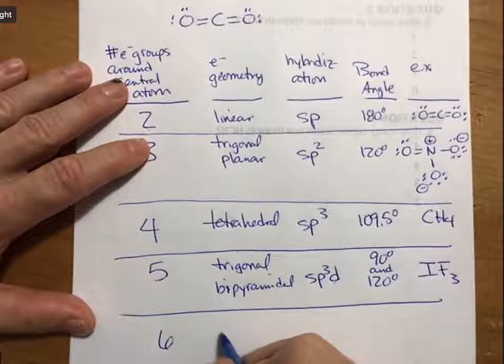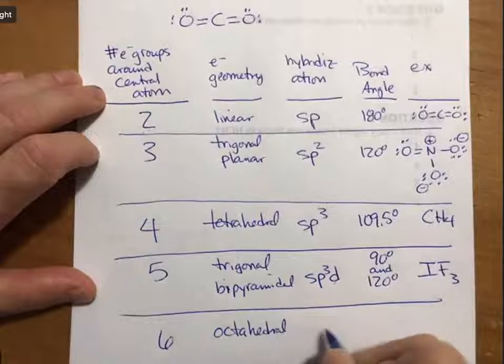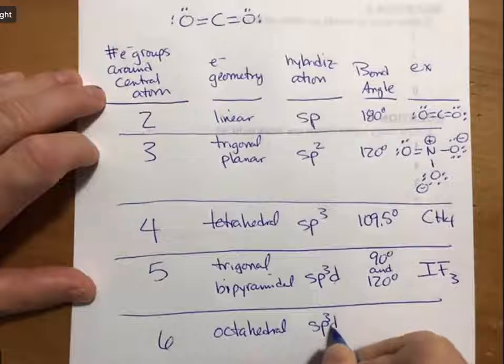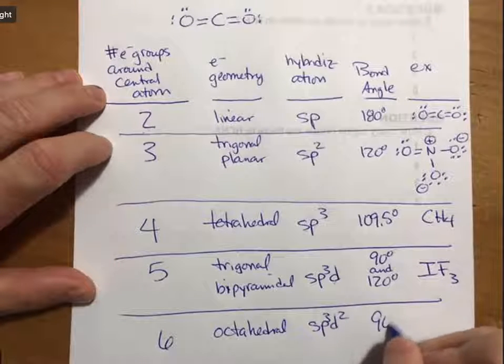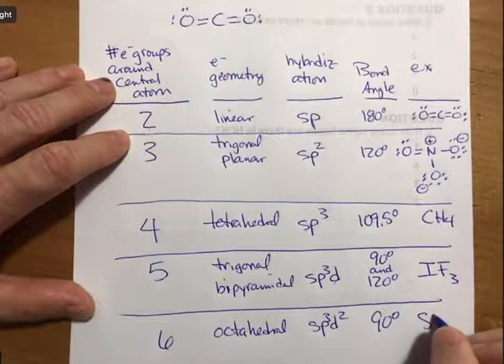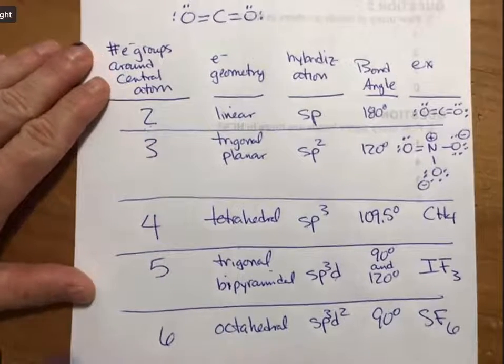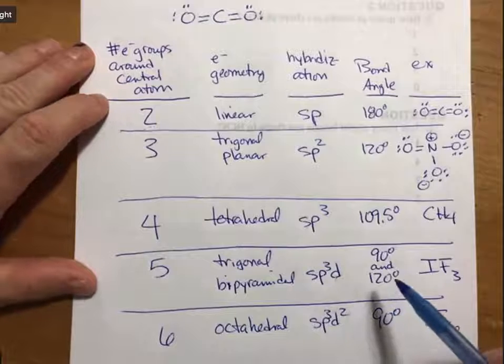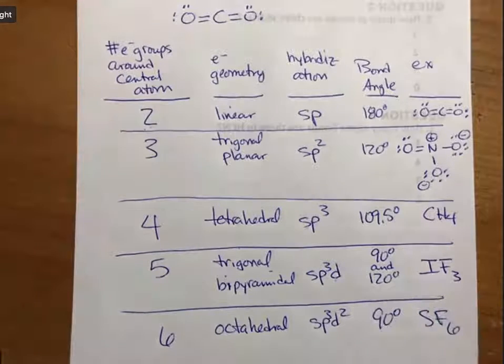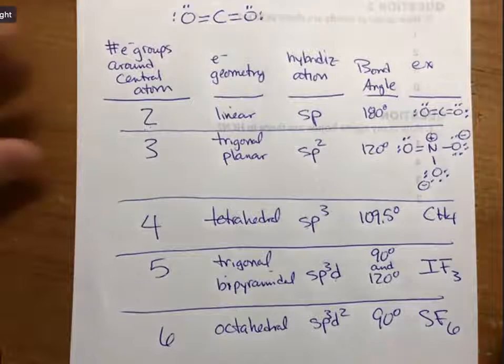Finally, six electron groups would be octahedral, sp3d2, and only 90 degrees, with SF6 being a good example. This little table will be very helpful as we go through these problems. Are there any questions about this table before we tackle some of the problems? Alright, then tackle away we shall.